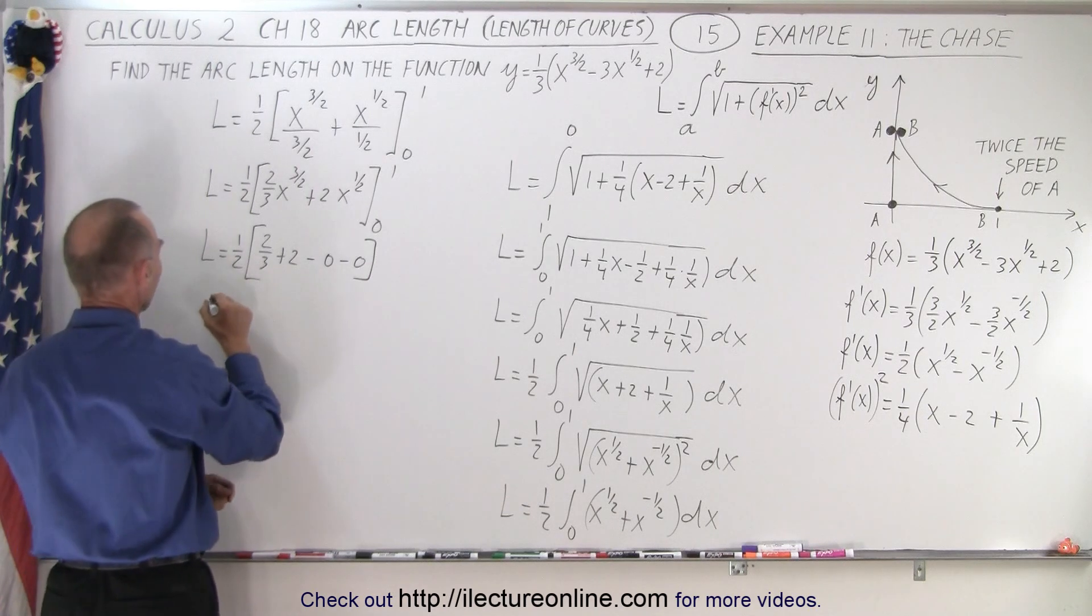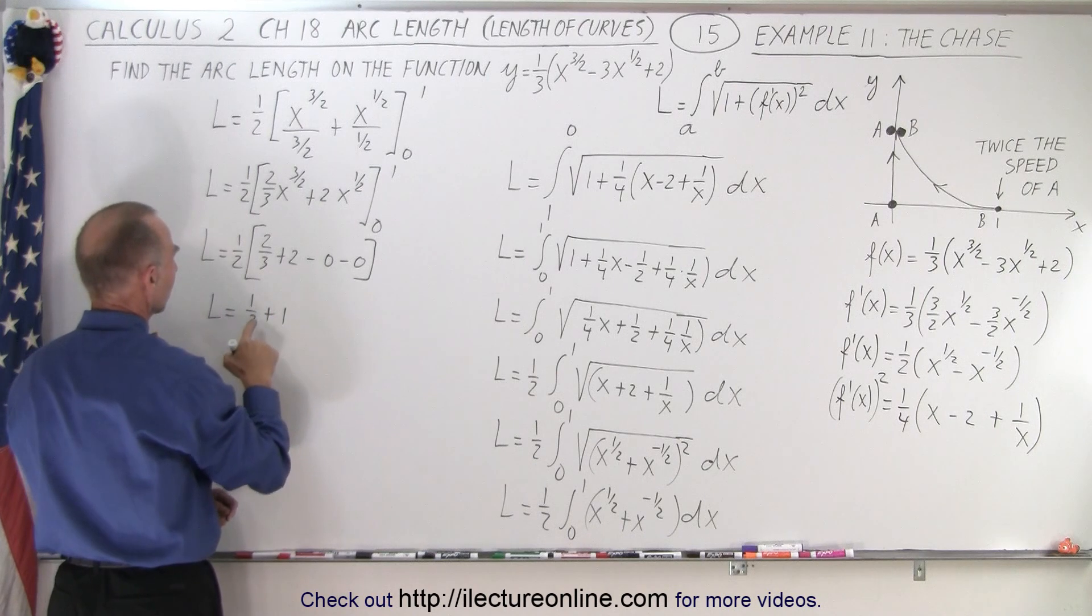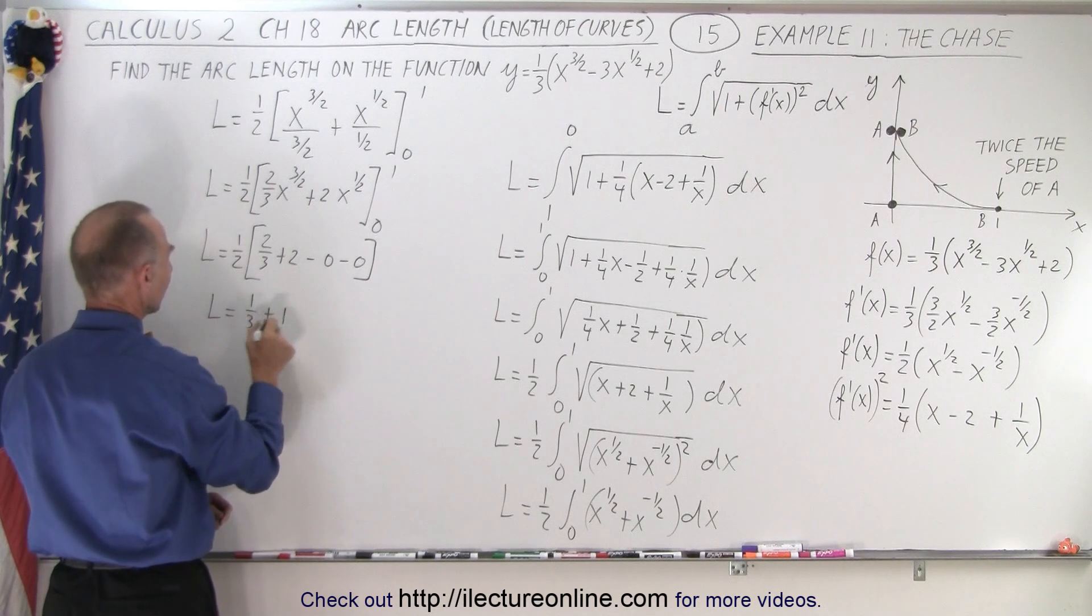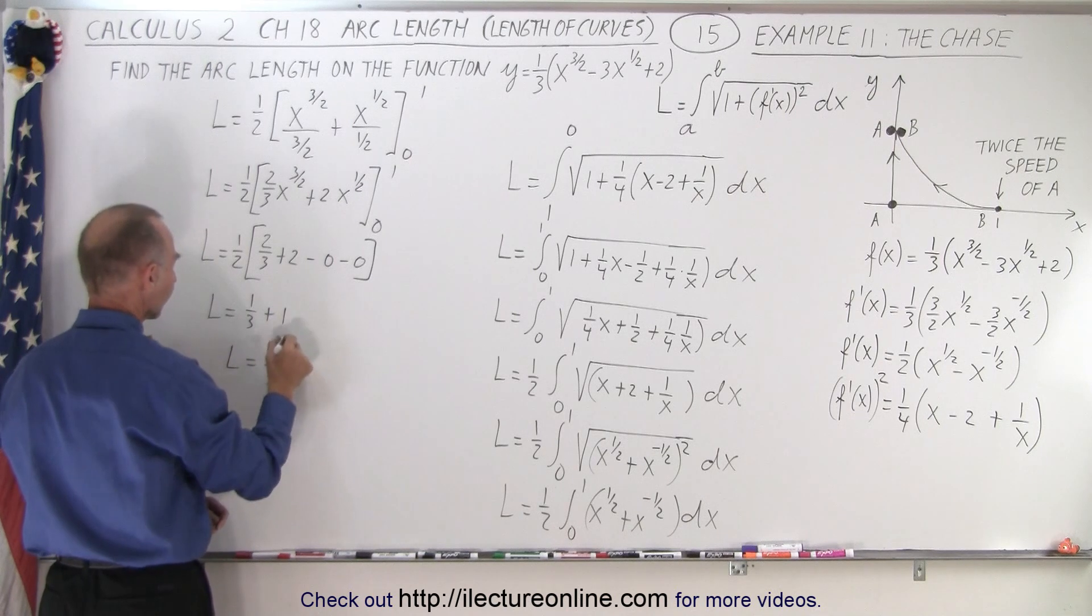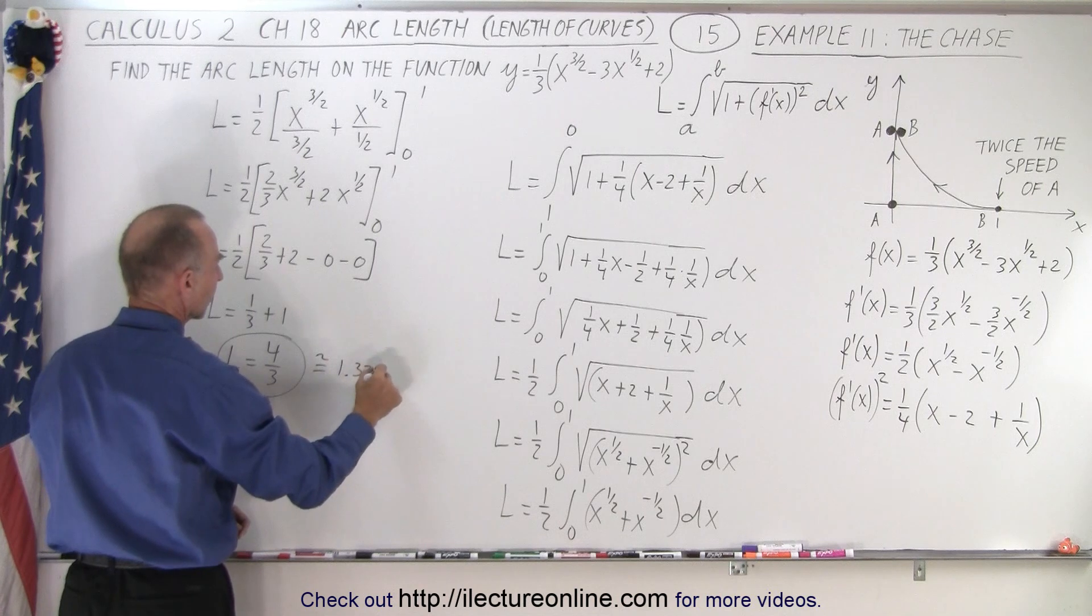So multiplying times one-half, we get L is equal to one-third plus one, one-third, not right, one-half, one-third plus one. So L equals four-thirds, or approximately equal to 1.333, like that.